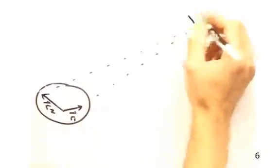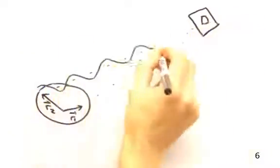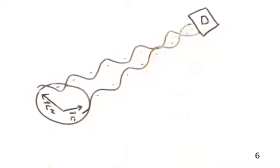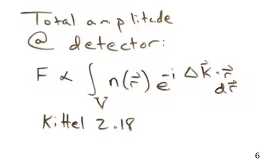This brings us to Kittel 2.18. So diffraction phenomena really occurs within this integral because as we're summing over all the possible exit waves, some will constructively or destructively interfere to produce a final net amplitude at our detector. And you know, one really cool thing to notice is with the integral we can just say that our amplitude is the Fourier transform of our scattering density with respect to the change in our wave vector.